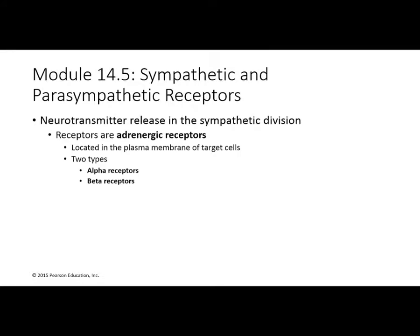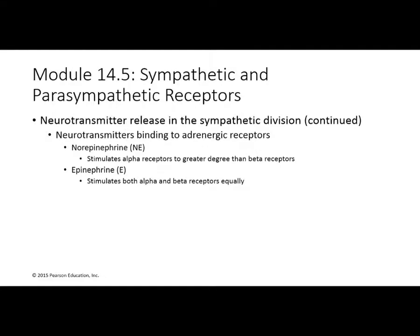The only neurotransmitter discussed so far this semester has been acetylcholine, which we saw in muscle control. Acetylcholine is also involved in the autonomic nervous system. Now let's turn to different neurotransmitters. In the sympathetic nervous system, there are adrenergic receptors — two types: alpha and beta adrenergic receptors. The neurotransmitters affecting these receptors are norepinephrine and epinephrine. Norepinephrine more greatly stimulates alpha receptors, whereas epinephrine stimulates both alpha and beta equally.